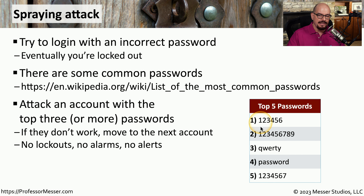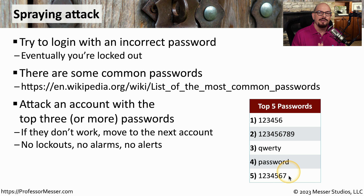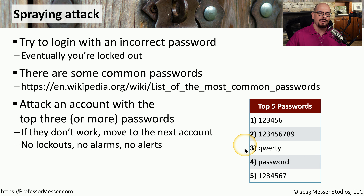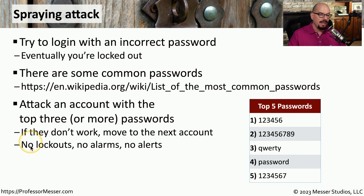So instead, attackers might try the most common passwords. This is a list of the top five most common passwords as found on Wikipedia: passwords like 123456, 123456789, QWERTY, password, and 1234567. Although it may seem obvious that people shouldn't use these passwords, people all too commonly use them to secure their accounts. All an attacker needs to do is try the top three passwords on the list. If they don't gain access, they simply move on to the next account. The attacker tries three attempts per account, then moves on — meaning there won't be any lockouts, no alarms or notices in a security report.